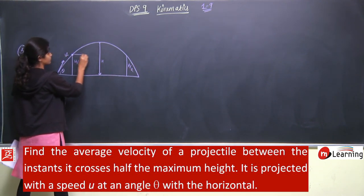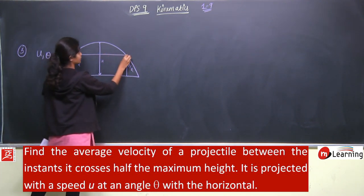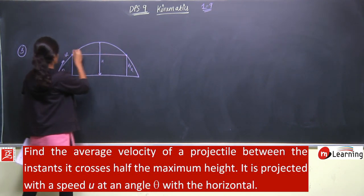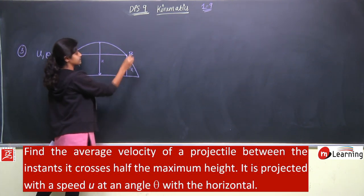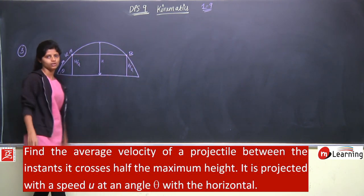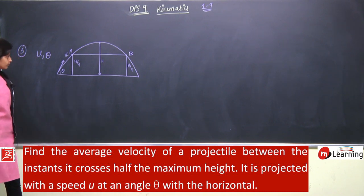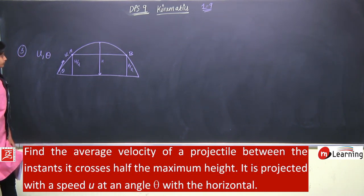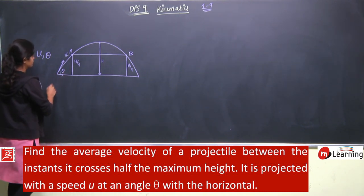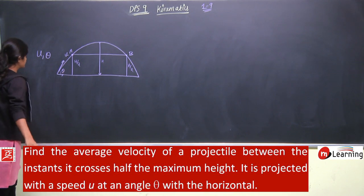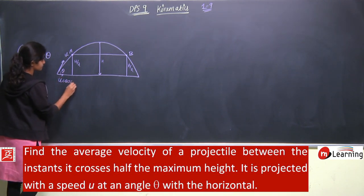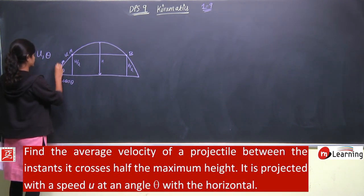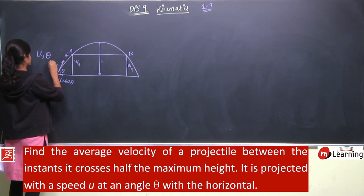So between these two instants, from point A to point B, what will be the average velocity? That is the question. So what will be the speed? Horizontally u cos theta and vertically u sin theta.